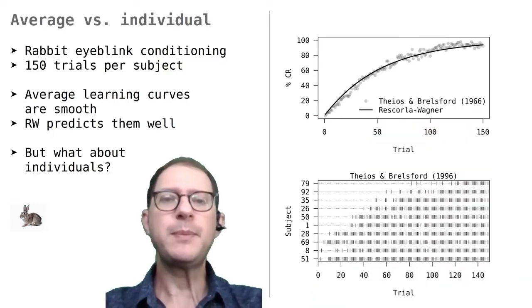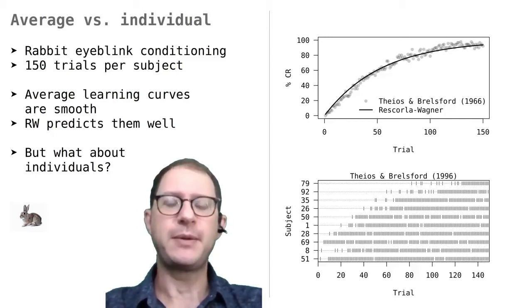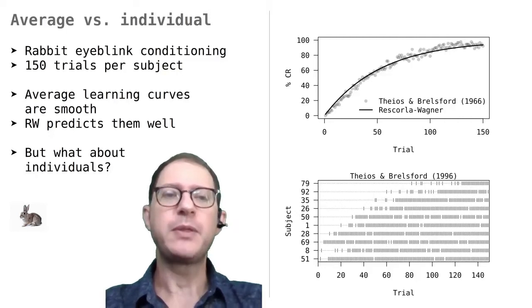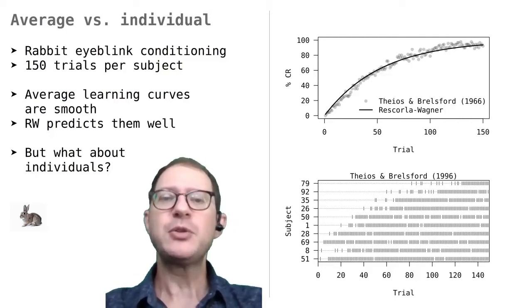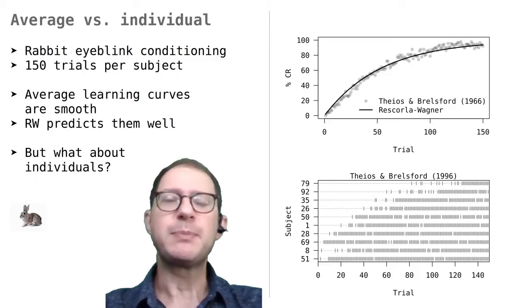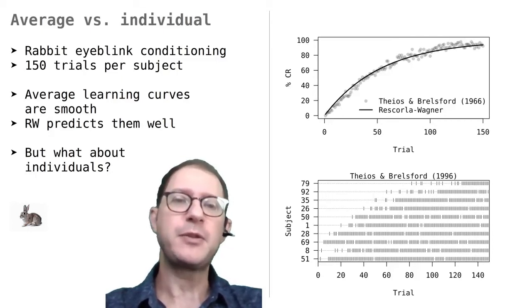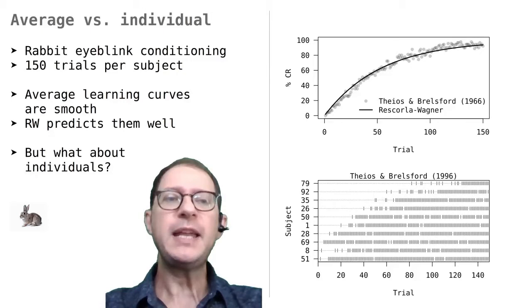The top image in this graph shows the percentage of rabbits that blinked on any given trial during this experiment. This was a large study with nearly 100 rabbits, so we can see a smooth increase in overall blinking. The line is the best fit provided by the Rescorla-Wagner model, which as you see is pretty good.